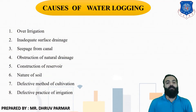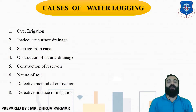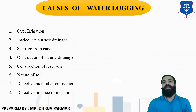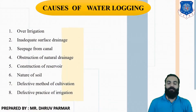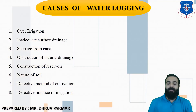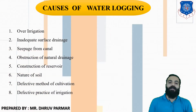The fifth cause is construction of reservoirs. When a large dam is constructed to store water, water again percolates to the ground and raises the groundwater table. The sixth cause is the nature of soil. Different soils have different capacities to retain water, such as black cotton soil and clay. For example, in sandy soil, water is stored in minimum amount and directly percolates to the ground, so waterlogging is more likely to occur.